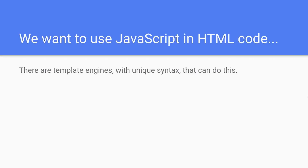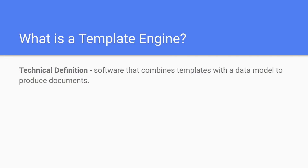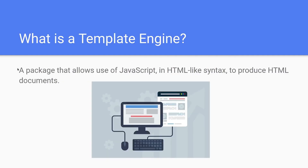Pug — how does it work? We actually want to use JavaScript in HTML code. There are things called template engines with unique syntax that can actually do this. The syntax is similar to HTML, but it's not actually the same. What is a template engine? The technical definition is software that combines templates with a data model to produce documents. The contextual definition is: it's a package that allows us to use JavaScript in HTML-like syntax to produce HTML documents.